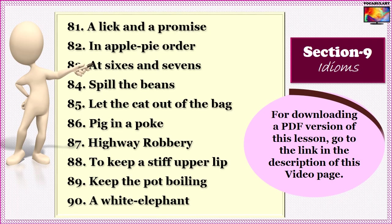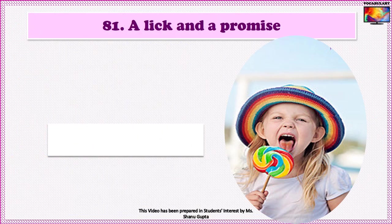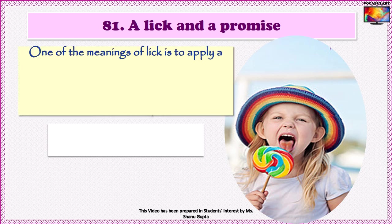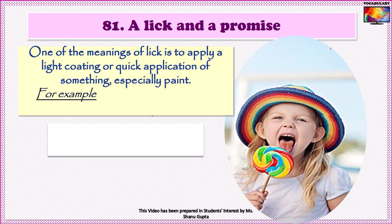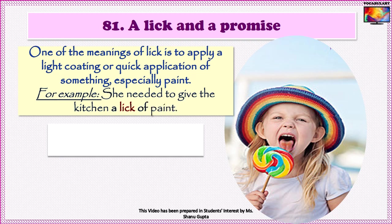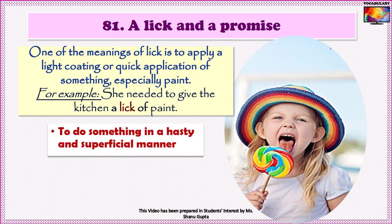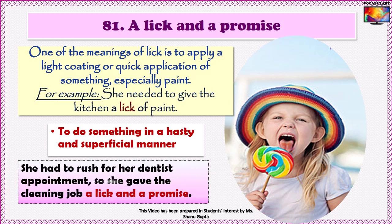We move on to section 9. Idiom No. 81 is 'A lick and a promise.' The word lick in this phrase is informally used to mean to apply a light coating or quick application of something, especially paint — for example, 'she needed to give the kitchen a lick of paint.' So 'a lick and a promise' means to do something in a hasty and superficial manner. An example: 'She had to rush for her dentist appointment, so she gave the cleaning job a lick and a promise.'